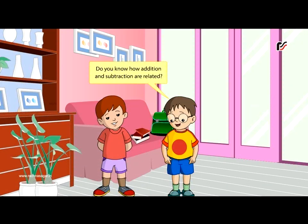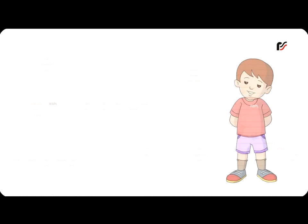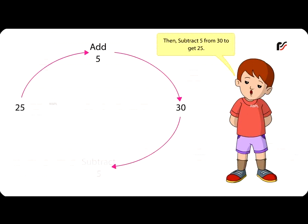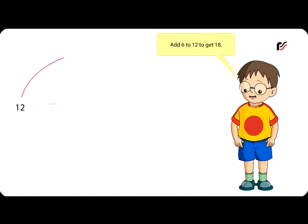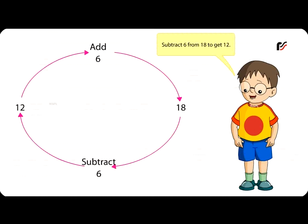Do you know how addition and subtraction are related? Yes, they are opposite operations. For example, add five to twenty-five to get thirty, then subtract five from thirty to get twenty-five. Add six to twelve to get eighteen; subtract six from eighteen to get twelve.